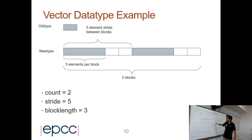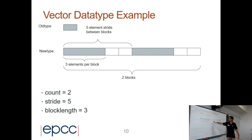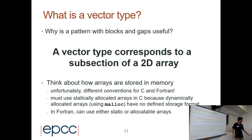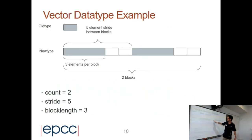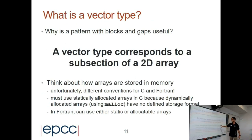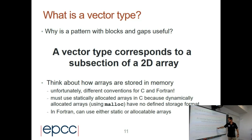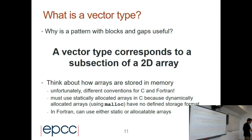Why would I need to send one portion and then another portion of an array? It makes good sense if we have a 2D array, because each portion could be one row of the 2D array. In that case you can send only a part of the 2D array instead of the whole thing. One thing to take into account is that in C and Fortran, how arrays are stored in memory is different.